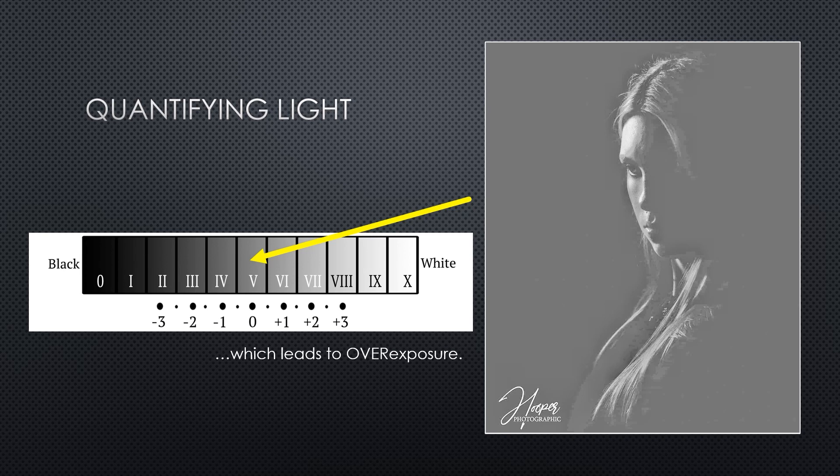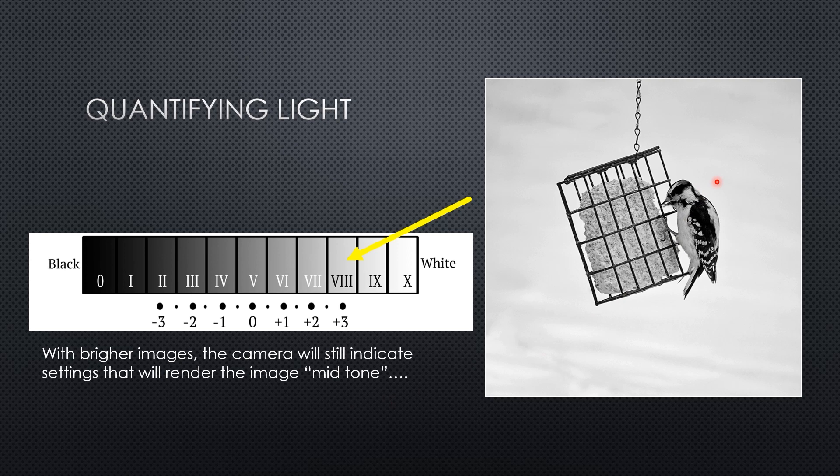The same can be seen in this image of the woodpecker against the snowy field background. Obviously, this scene is quite a bit brighter than average. If we were to blend all the lights and the darks together, we would end up with an image that's somewhere around a Zone 8. If we were to photograph this with our camera in one of the auto exposure modes, it will suggest a set of shutter speed and aperture that will yield me a Zone 5. So that will end up creating an image that is one, two, three stops darker than what I would like it to be. The result would be an underexposed image of that woodpecker.